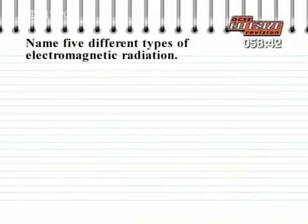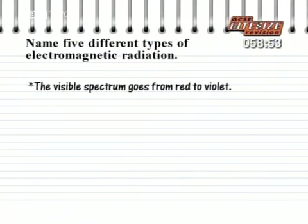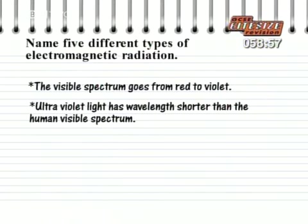Name five different types of electromagnetic radiation. To start with, there's the visible spectrum of light, from red to violet. There's ultraviolet light, with wavelengths shorter than violet, and outside the spectrum visible to humans, though some animals can see it.